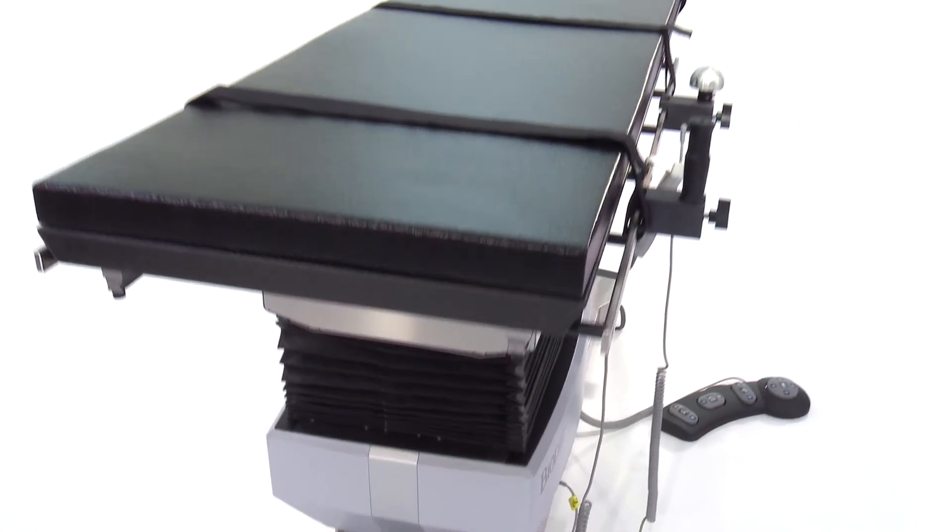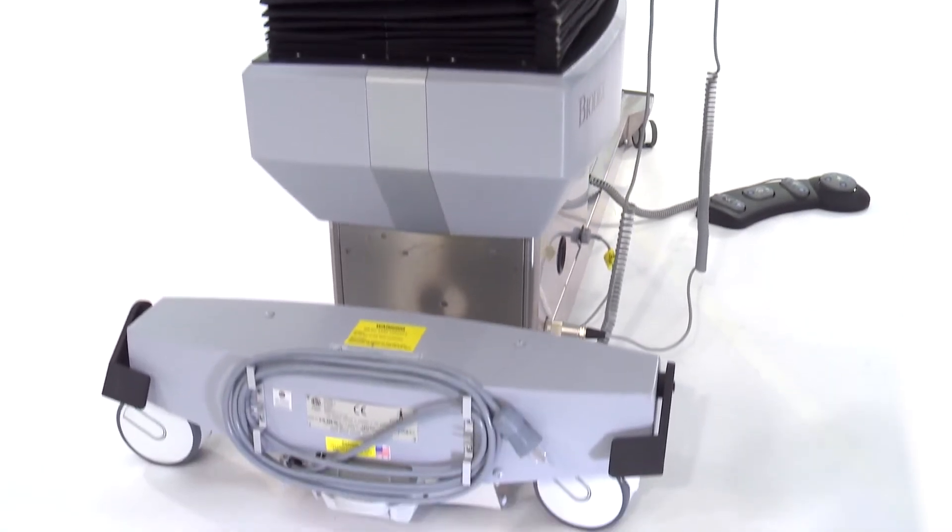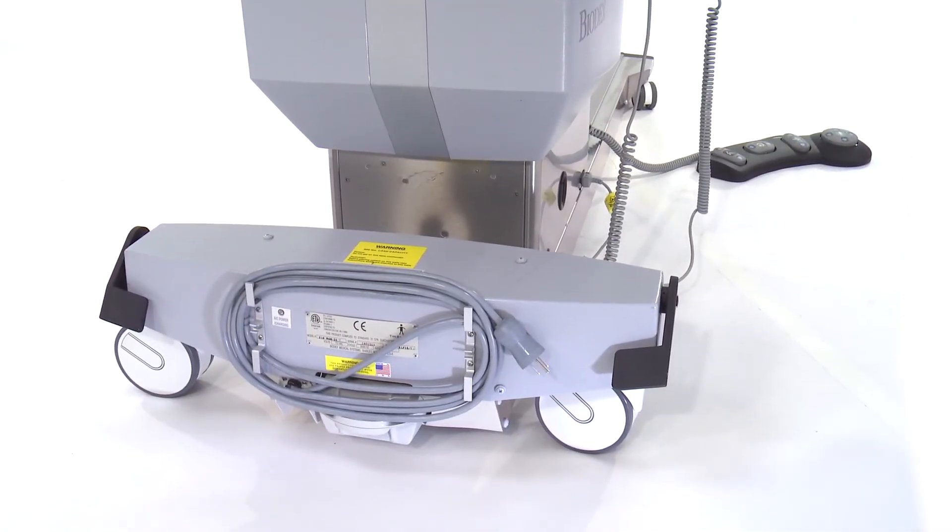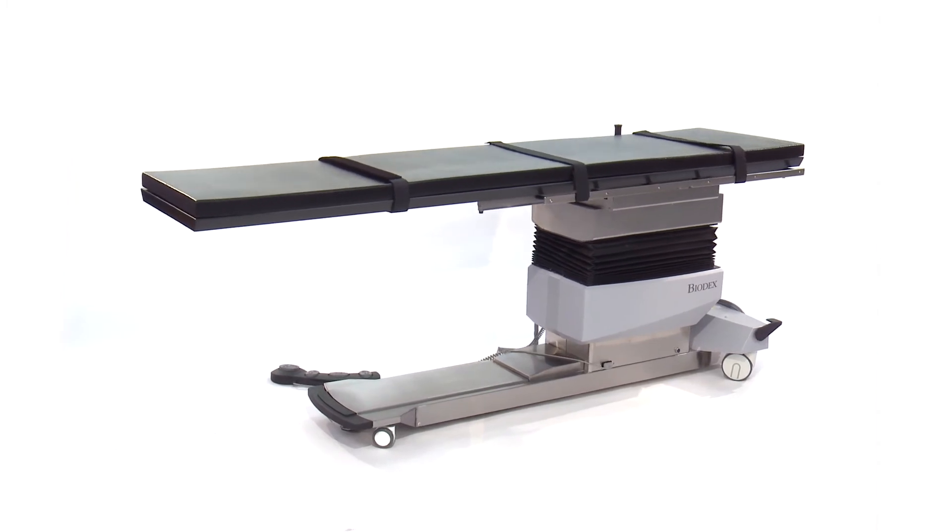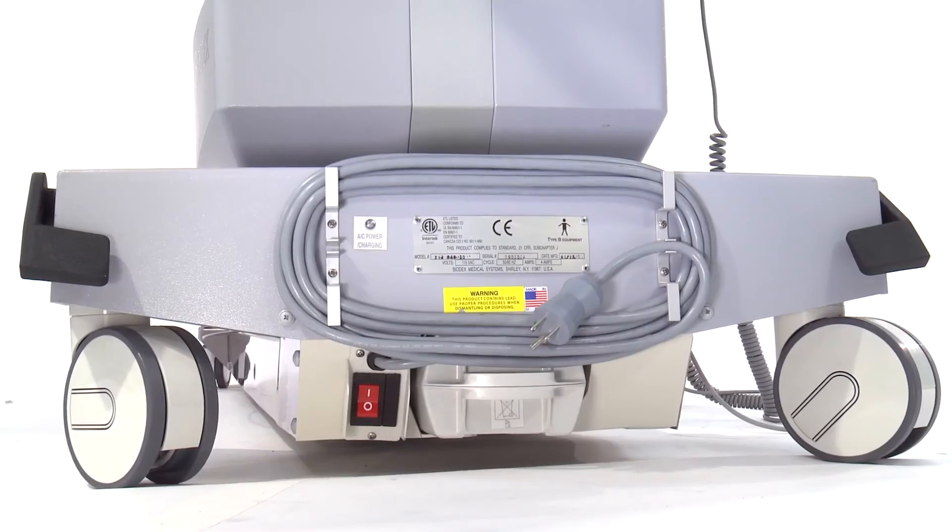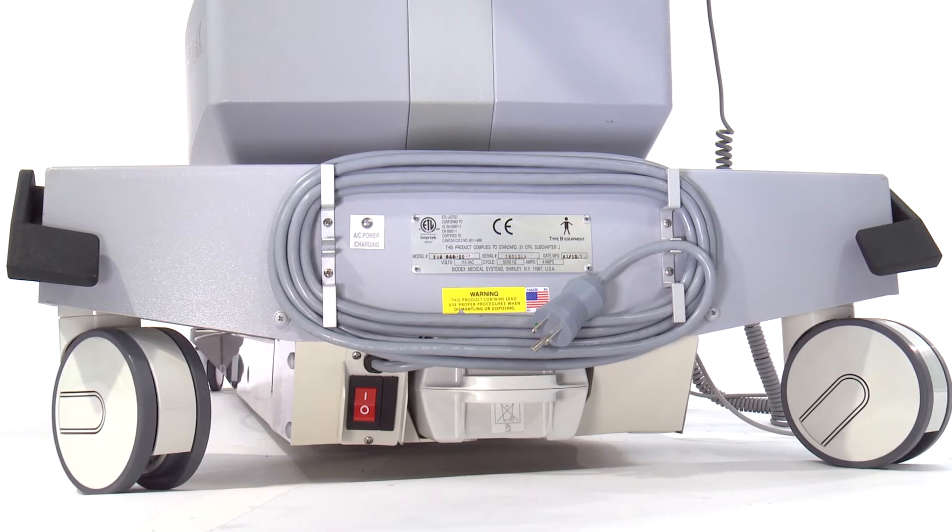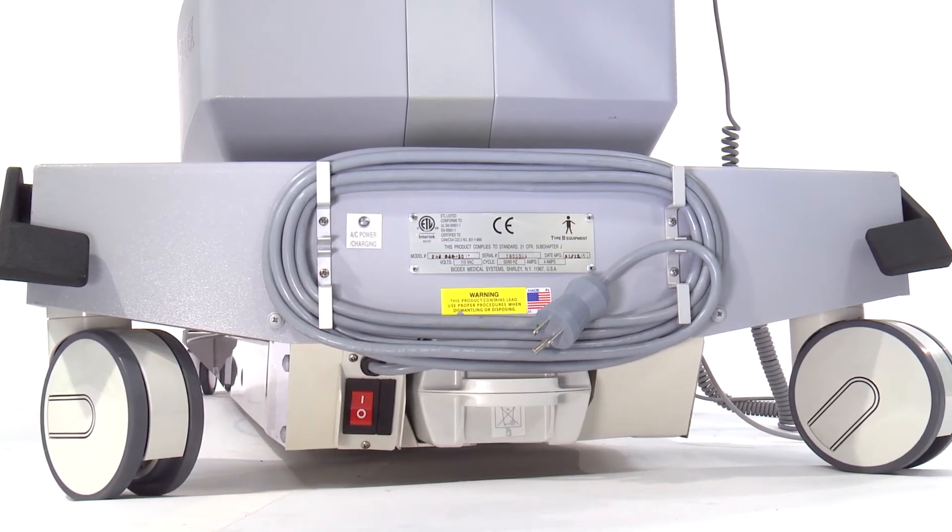Both AC and battery power are standard in the C-Arm Table 840. When running on battery power, there are no cords underfoot to hinder movement. An optional battery with a separate charging unit can provide continuous cordless operation.